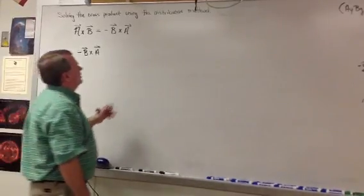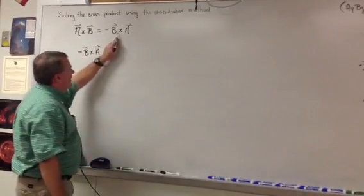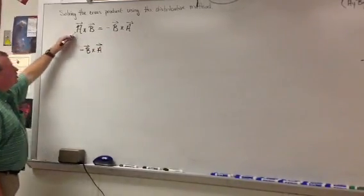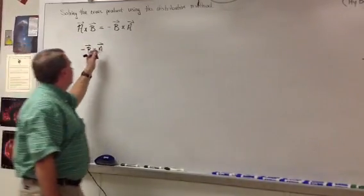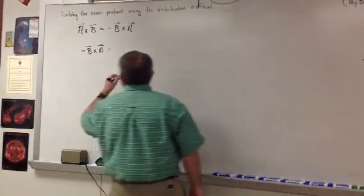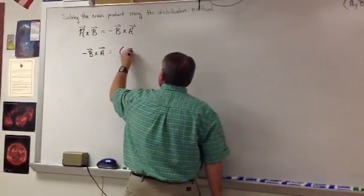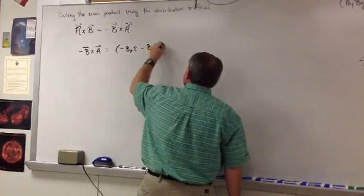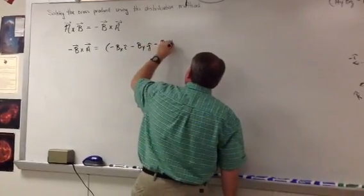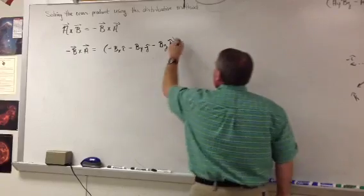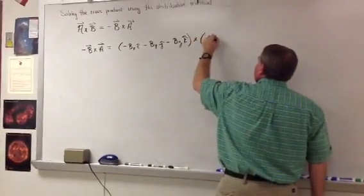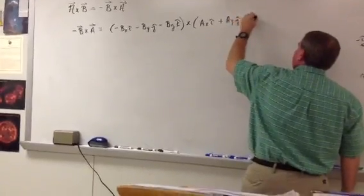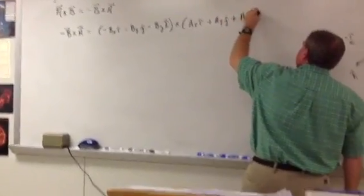Now we're going to solve the cross product using the distributive method for negative b cross a. We're going to prove that negative b cross a is equal to a cross b. So we write down the general form for b: negative bx i minus by j minus bz k, crossed with a: ax i plus ay j plus az k.